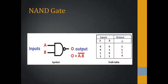Here is the truth table. According to the truth table, when both inputs A and B are zero, the output is one. When one input is zero and one is one, the output is still one. But if both inputs are one, meaning both get a source, then the output would be zero.